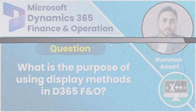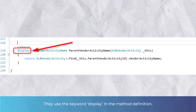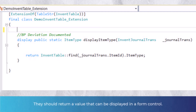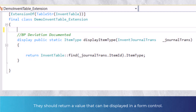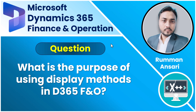However, there are times when the value you wish to show is not stored explicitly in a field on the table. In that case you can use what is called the display method. Display methods are similar to regular X++ methods but with a couple of differences. First, they use the keyword 'display' in the method definition, and they should return a value that can be displayed in the form control — basically a basic data type such as a string, integer, real value, or enum value.